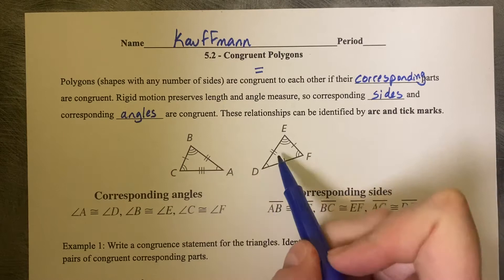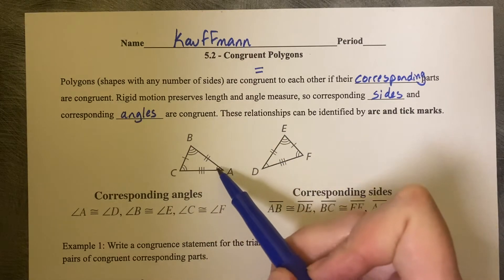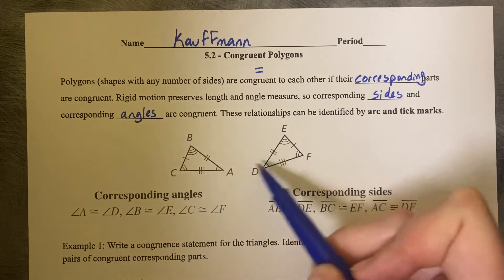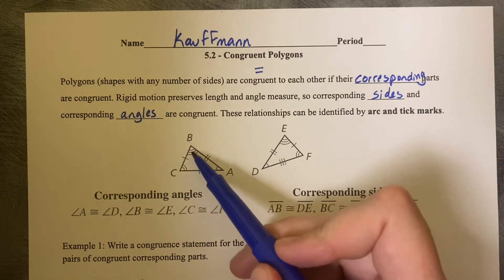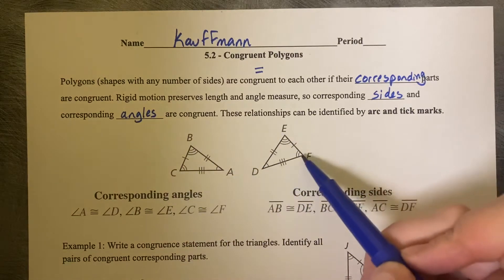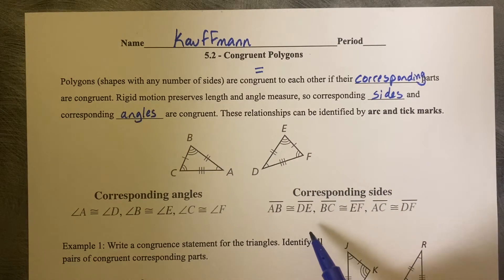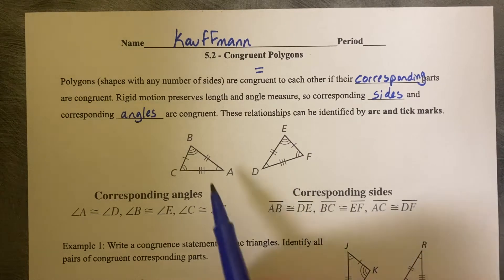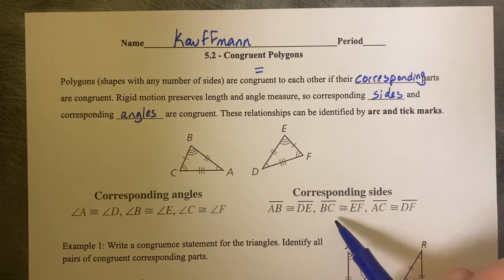So these two triangles are congruent to each other, and you can use the arc marks and the tick marks to see who is corresponding to who. So one arc mark on angle A matches to D. B has three, so it matches to E. And C has two arc marks, so it matches to angle F. Then your corresponding sides have tick marks on them as well. So AB, the two tick marks,